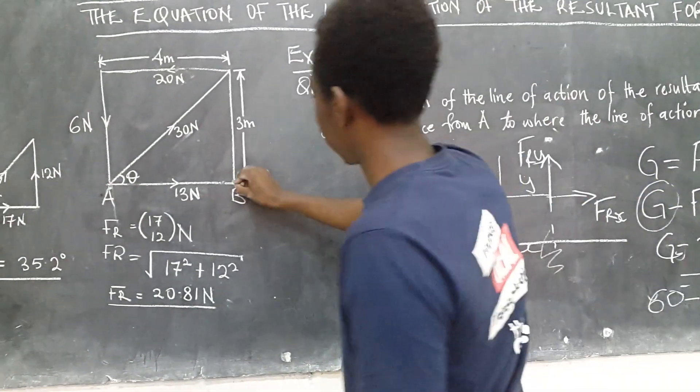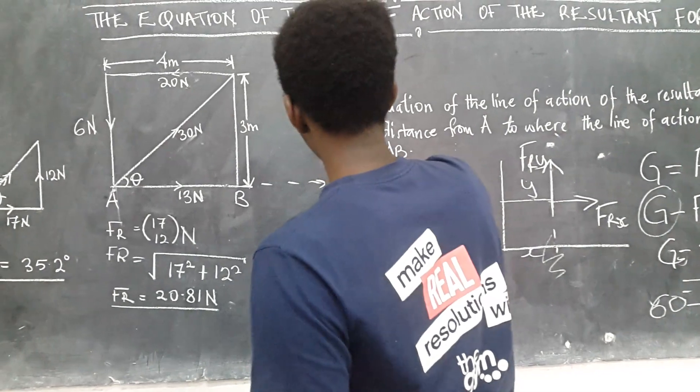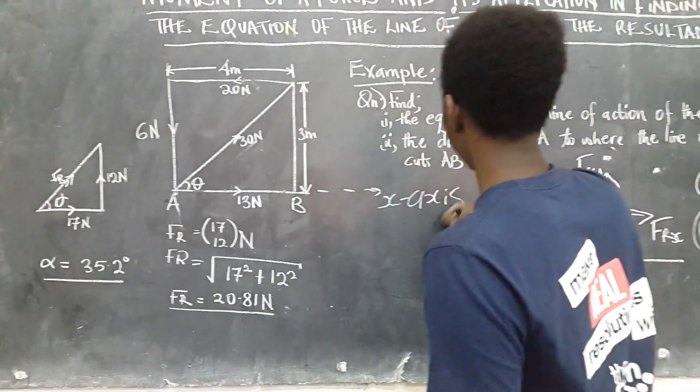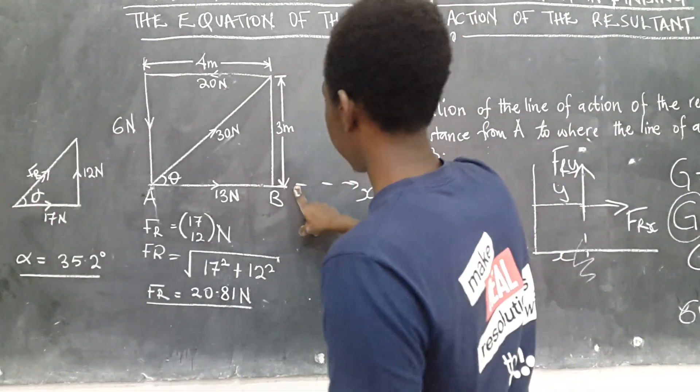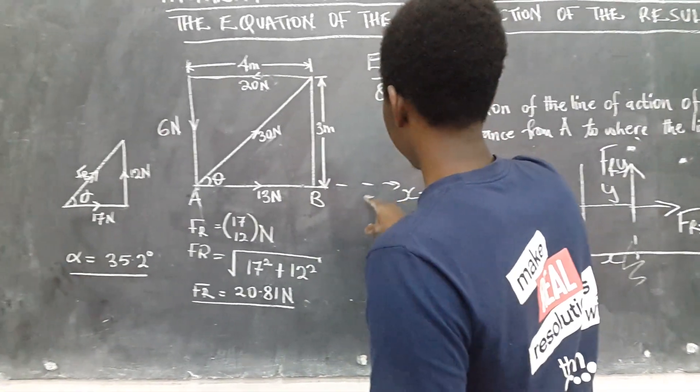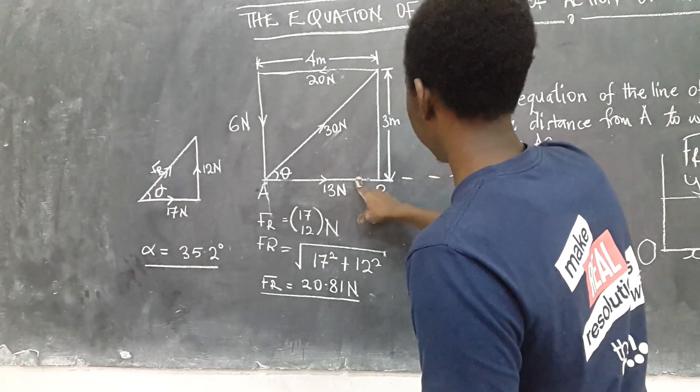Now to find where it cuts AB, AB is along the X axis of this system here. So to find where the line of action of the resultant force cuts AB we shall find the X-intercept of this line of action.